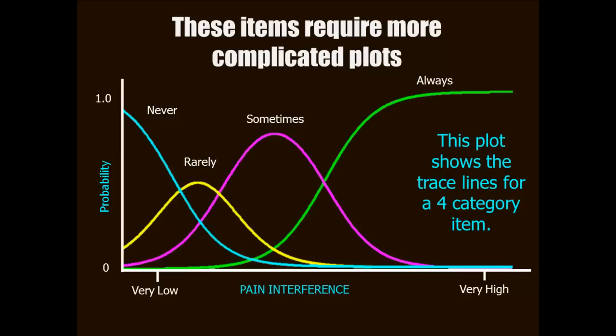By the way, if you picked a spot on the continuum representing pain and added up all the probabilities of responding never, rarely, sometimes, and always, they would all add up to one. Just as adding the probabilities of saying yes and of saying no would add up to one. However, notice that as you go from left to right, from very low to very high pain interference, those probabilities change. Some of them are very near zero, and others are very, very high.